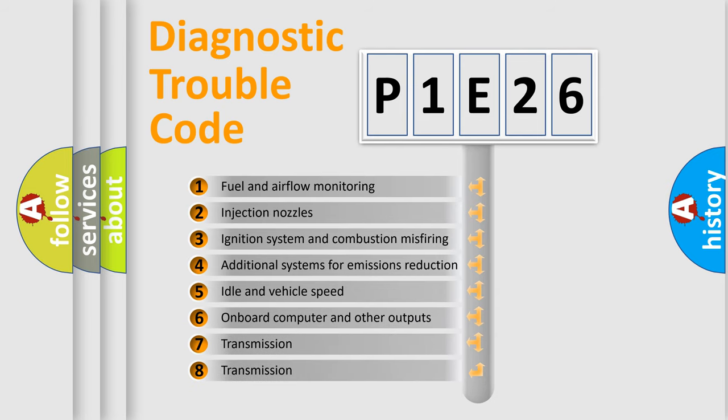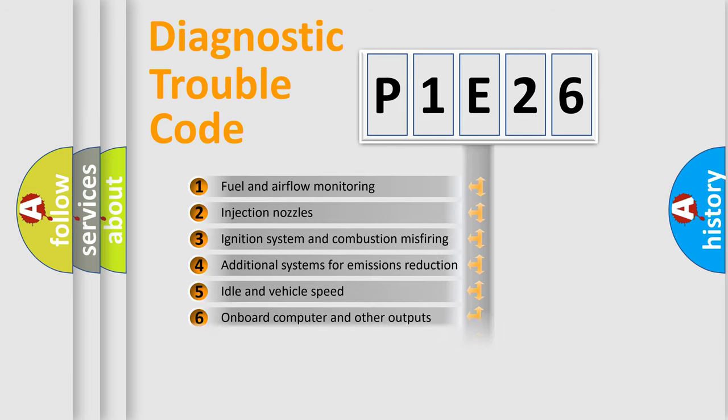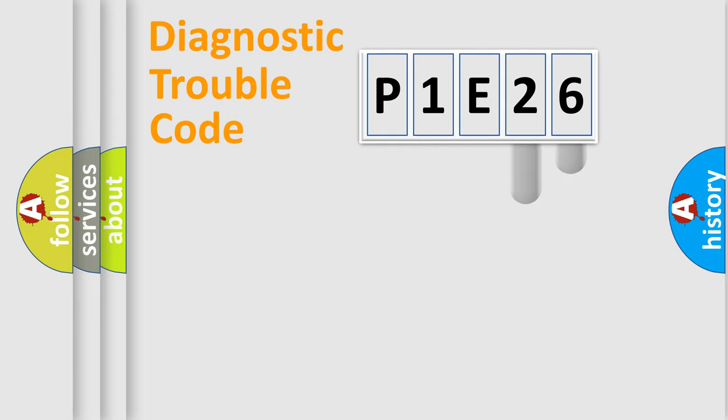The third character specifies a subset of errors. The distribution shown is valid only for the standardized DTC code. Only the last two characters define the specific fault of the group.